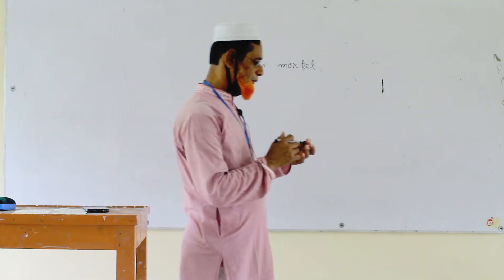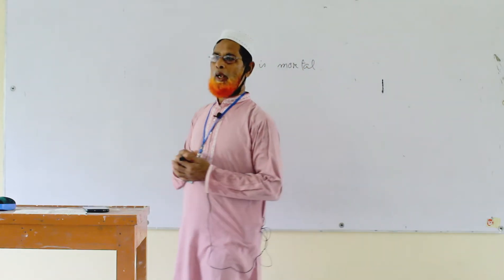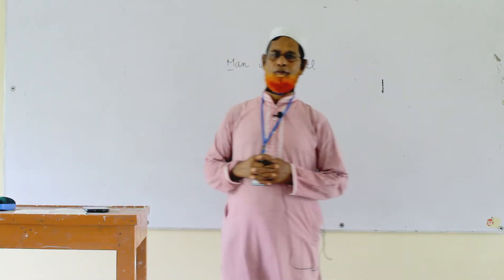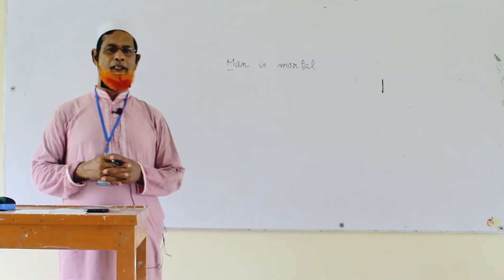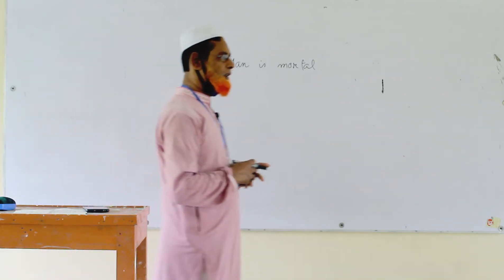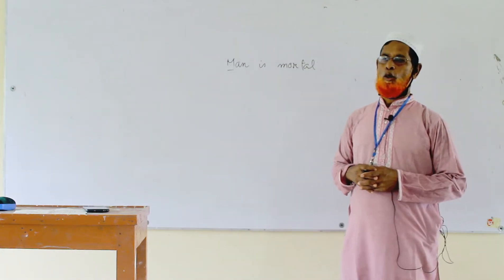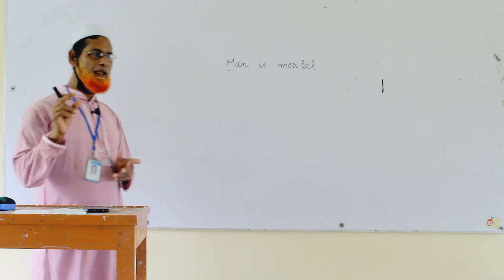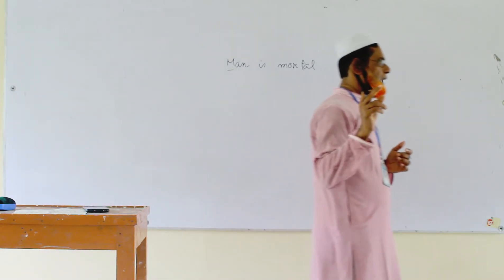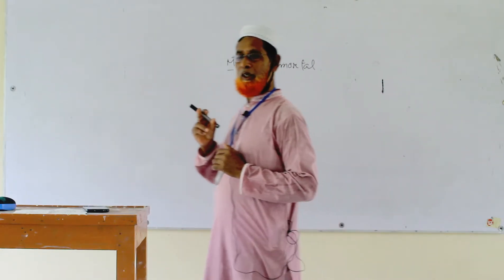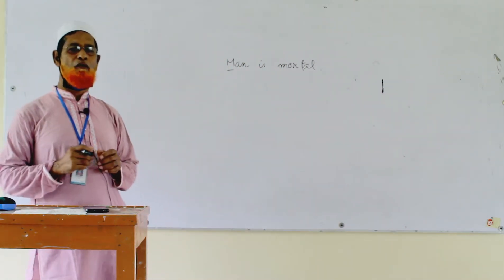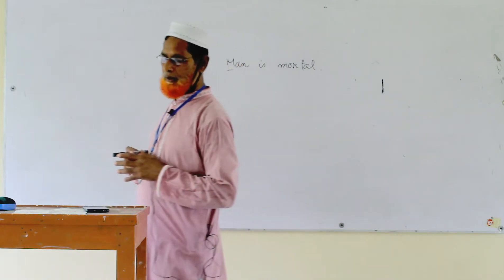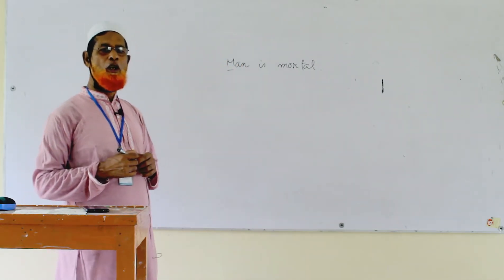Number two: the first letter of every line of an English poem is in capital letter. In an English poem, the first letter of each line is written in capital.